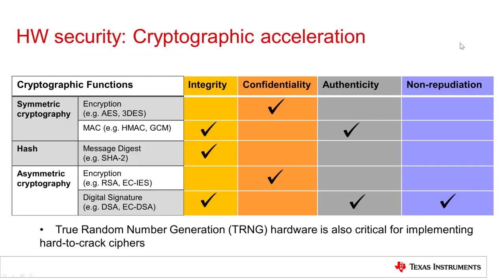We're now going to look at some of the different hardware security features found on microcontrollers and microprocessors. I'm going to relate these to some of these core security concepts, as well as some of the issues raised in the first module concerning physical security. You'll generally find that most modern microcontrollers and microprocessors have cryptographic accelerators, which typically cover three different functions: symmetric cryptography, secure hashing, and asymmetric cryptography.